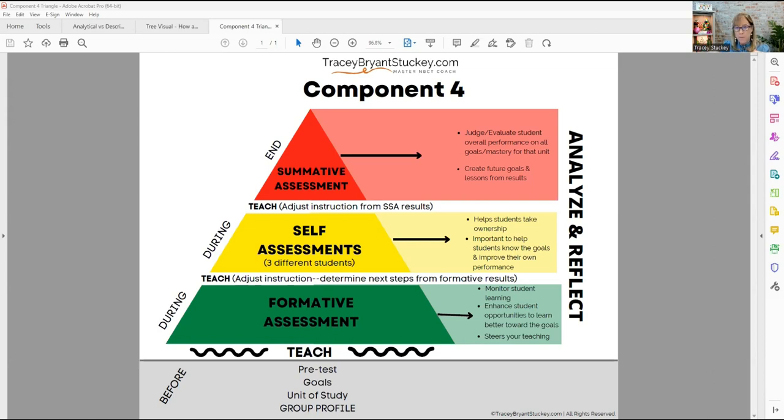If we start from the bottom and go up on the triangle, before the instruction, you're building your group profile down here at the bottom and determining what your kids' needs are. From there, you're developing the unit of study, setting your goals for the unit, and possibly doing a pretest. Then you're teaching. You've set the unit off, you've got the goals, you know where you're at, and then during it...